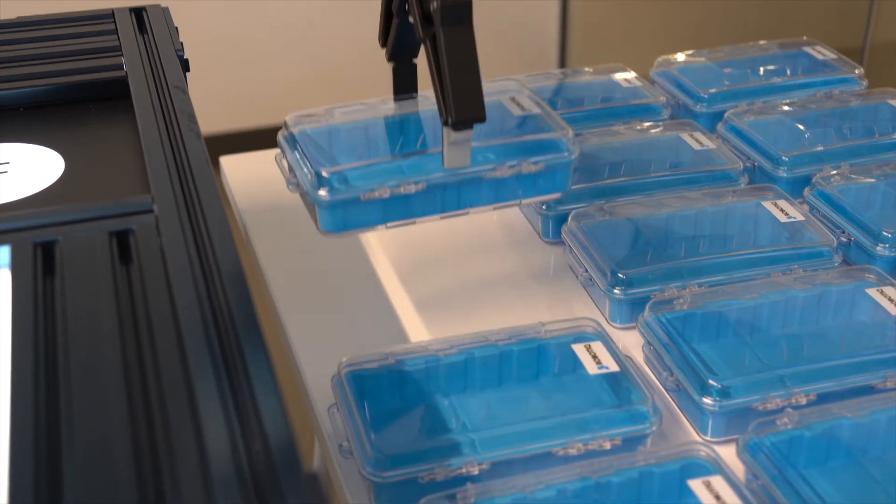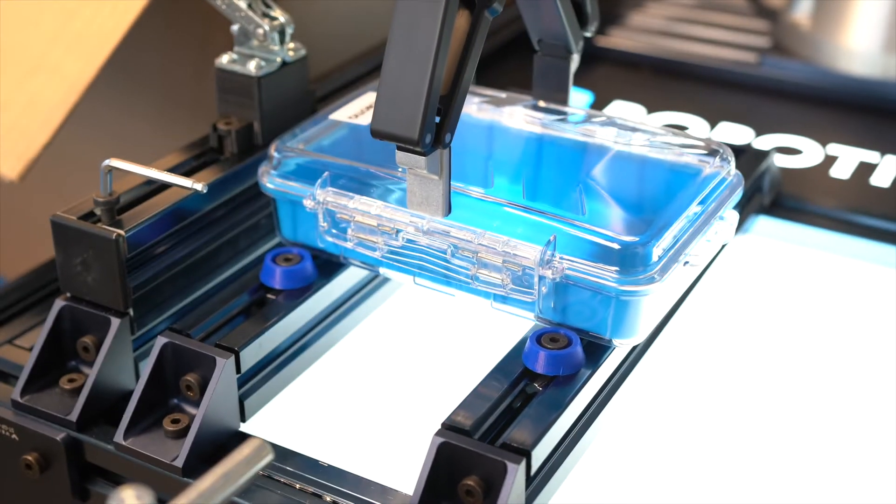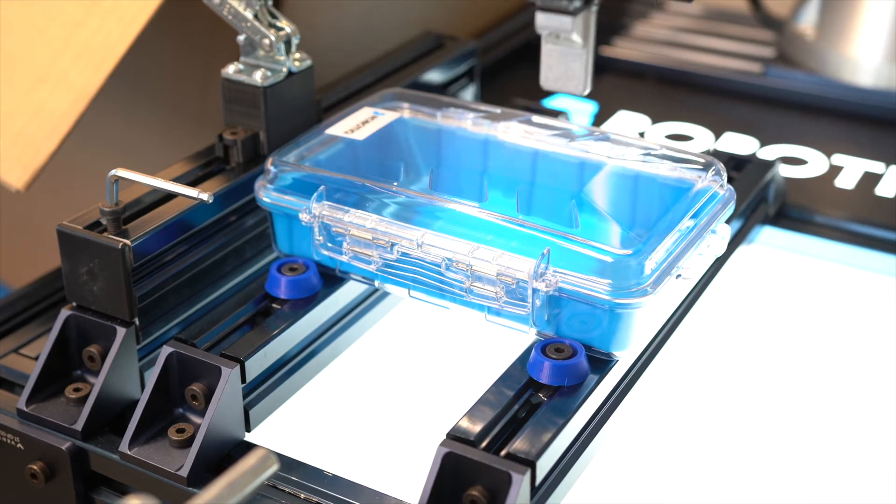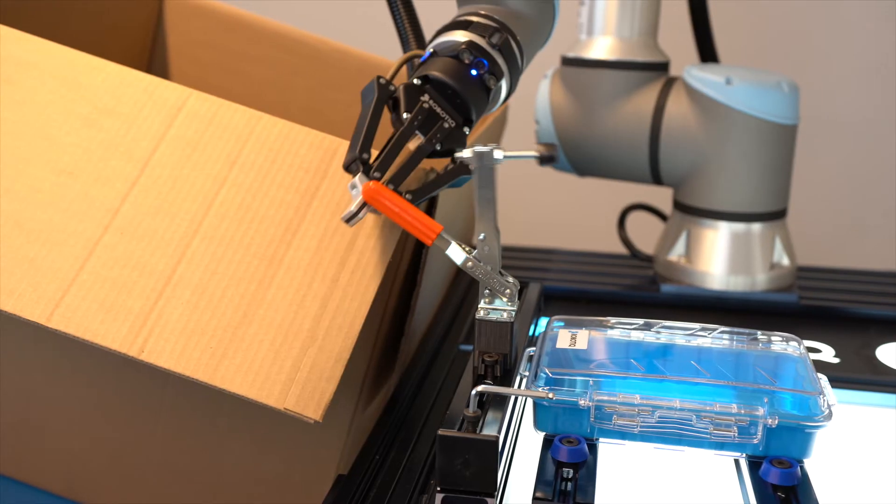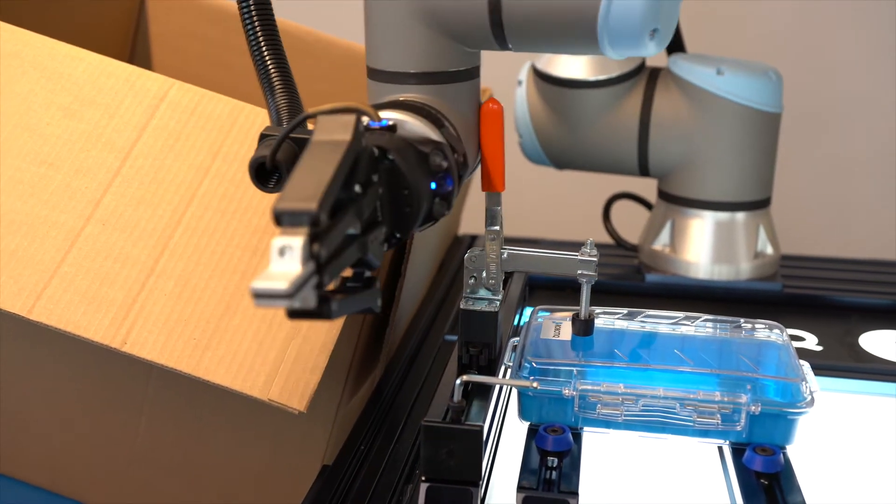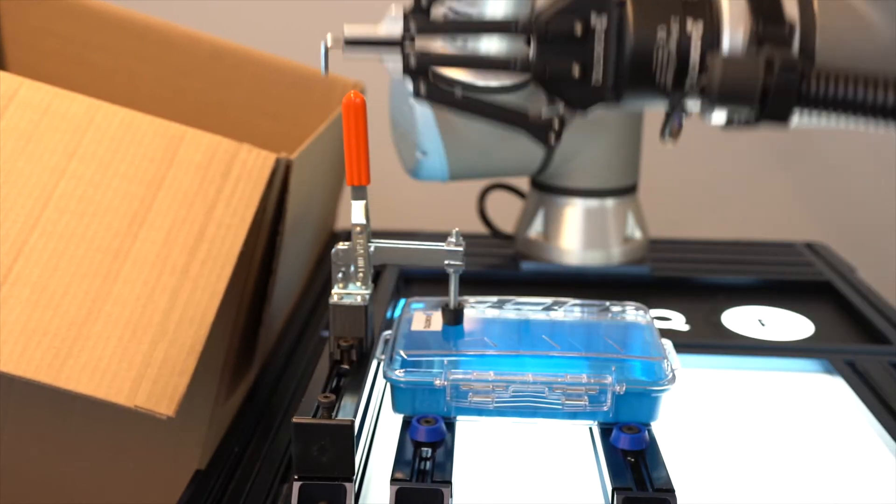We're using the camera to locate the different empty cases that are on the right here. Then we're using the gripper to do the different assembly tasks of the foam into the case. And we're using the Force Co-Pilot to insert the foam inside the case and locate some different features to complete the assembly and packing.